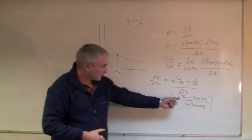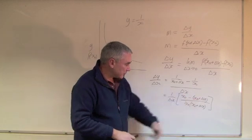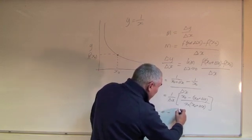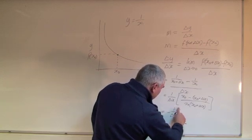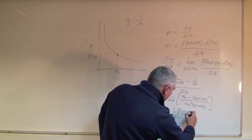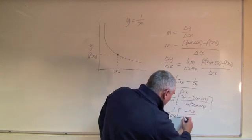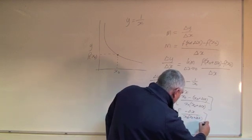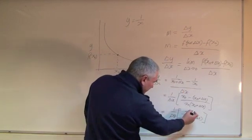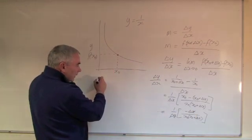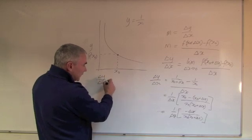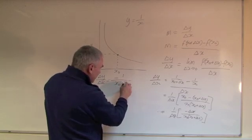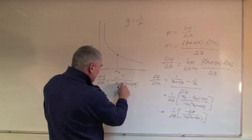all over X0 times X0 plus delta X. Let's not forget to close the bracket there, which will simplify quite nicely. X0 minus X0 minus delta X gives me minus delta—sorry, 1 over delta X, times X0 minus delta X, all over X0 times X0 plus delta X.